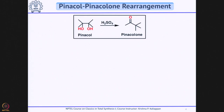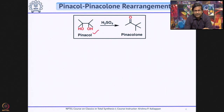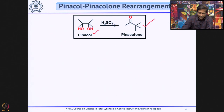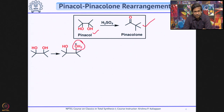What is the pinacol-pinacolon rearrangement? If you have a 1,2-diol and treat it with acid, it undergoes a facile rearrangement to a ketone called pinacolon. The whole process is called pinacol to pinacolon. When you have a diol, one of the alcohols is protonated, and once protonated, it automatically becomes a good leaving group.